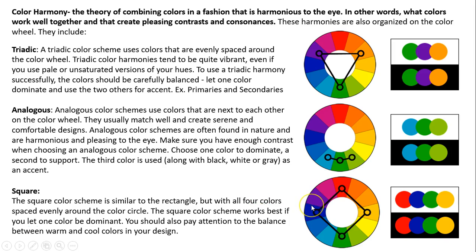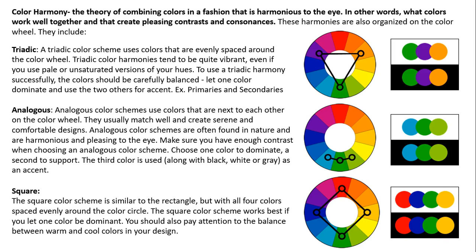A square scheme is similar to triadic but has four colors instead of three. They are equally spaced on the wheel and give you a square or diamond shape. Just like with analogous colors, a square harmony works best when you allow one color to be more dominant than the others. You don't want all four colors in equal amounts in your design — have one be dominant and the others be the backup or support.